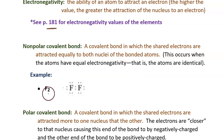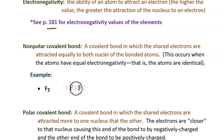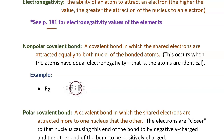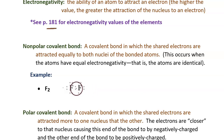Here's an example: F2, diatomic fluorine, a fluorine molecule. Here's the dot diagram for F2. The shared pair of dots in the middle is a single covalent bond. This is a nonpolar bond because those electrons are attracted equally to the fluorine on the left and to the fluorine on the right — they're right in the middle, not pulled tighter to either side. When the electrons are shared equally, it's referred to as a nonpolar bond.